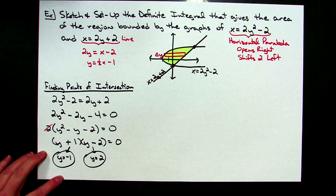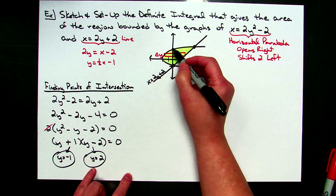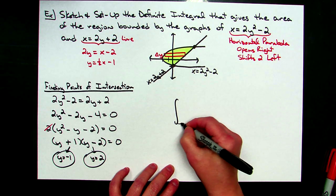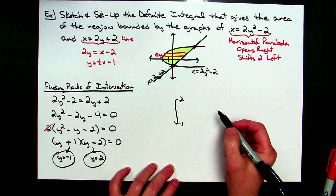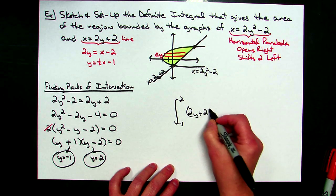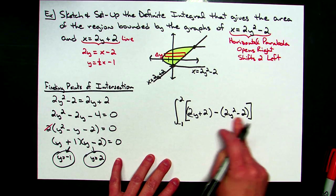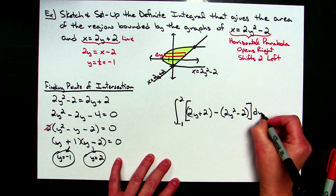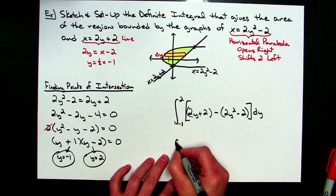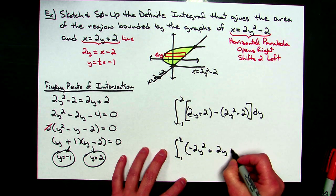Those intersection points are what I'll use for my integral limits — my sketch actually turned out well, going through negative one and two on the y-axis. So I'll run the integral from negative 1 to 2. This time I integrate the right curve minus the left curve: 2y plus 2 minus (2y squared minus 2), then dy since everything is in terms of y. Simplifying, I integrate from negative 1 to 2 of negative 2y squared plus 2y plus 4 dy.